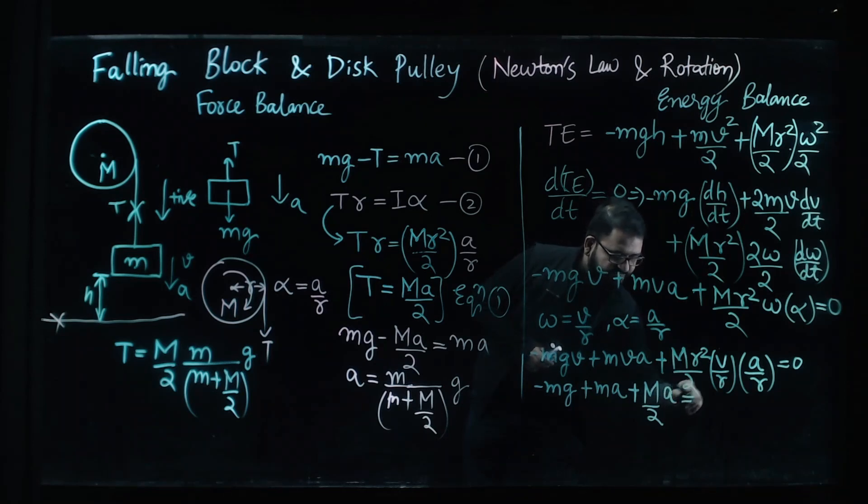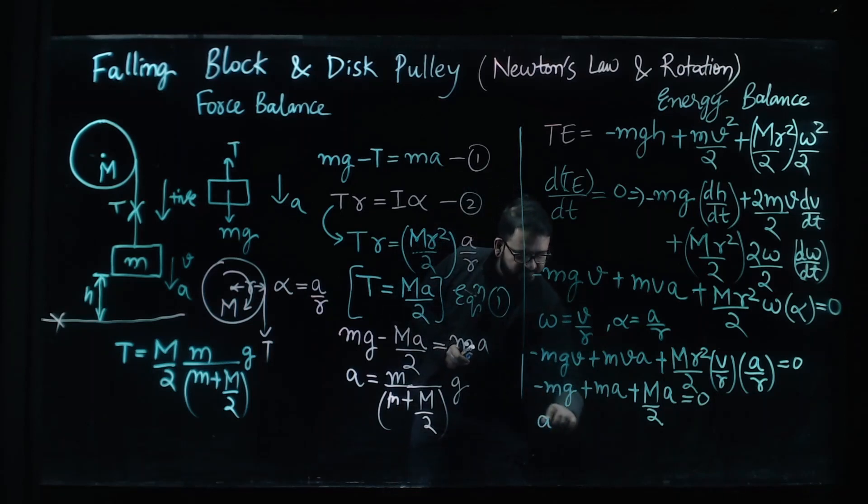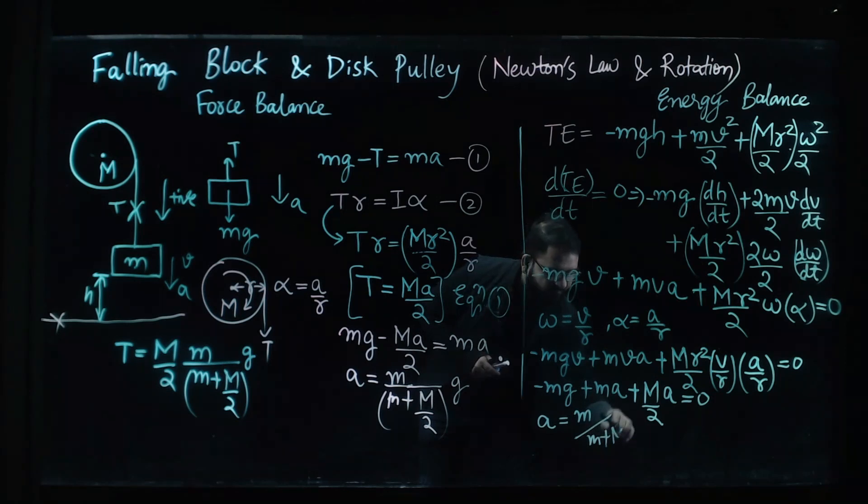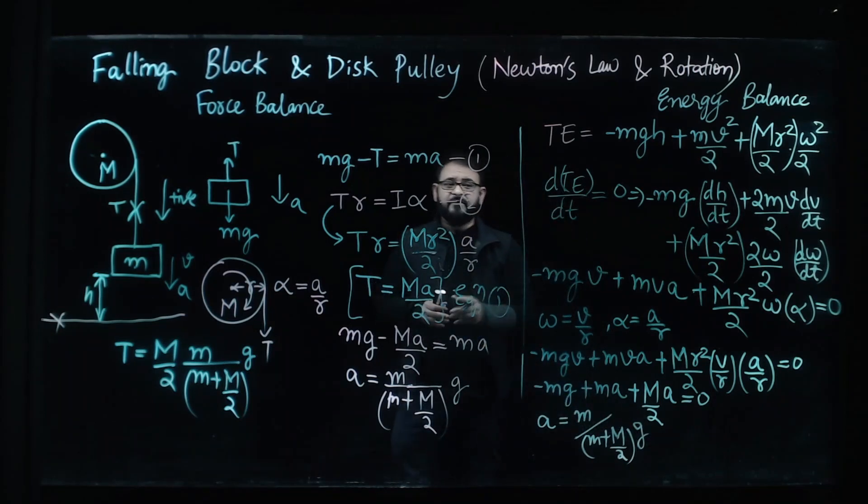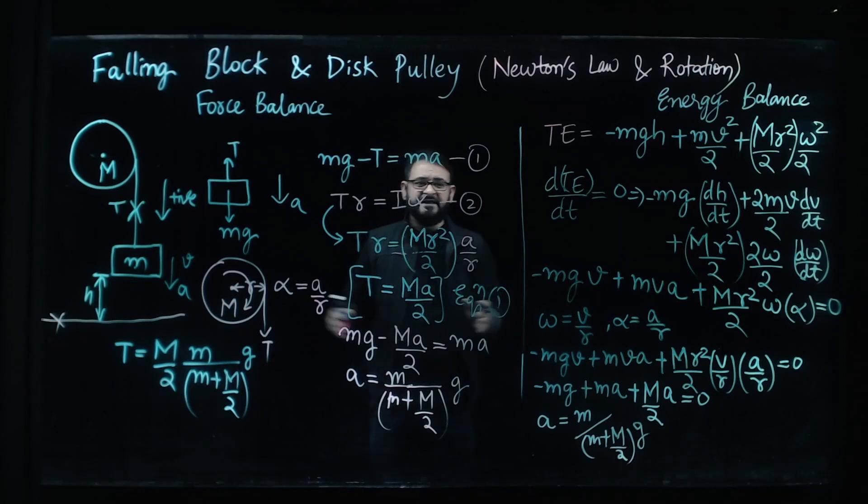But this is going to go to zero so you can see we have again obtained the same acceleration. This is M divided by M plus M by 2 times g. So we have recovered an exact expression of the acceleration.